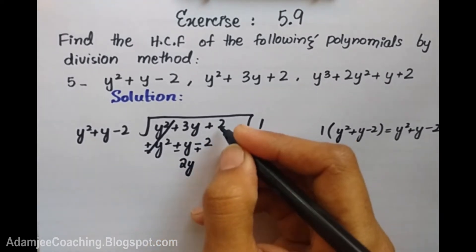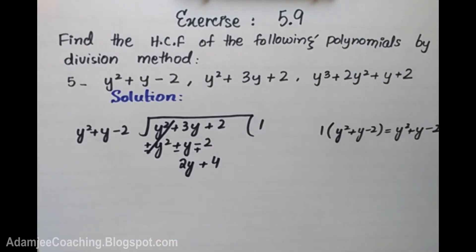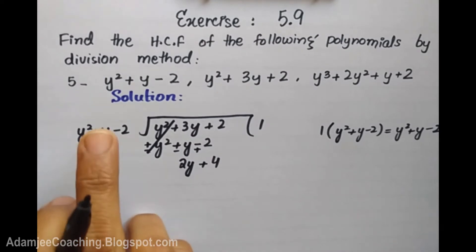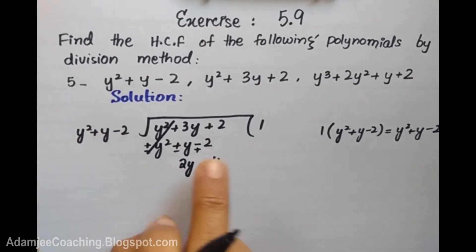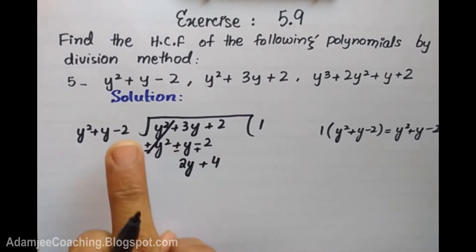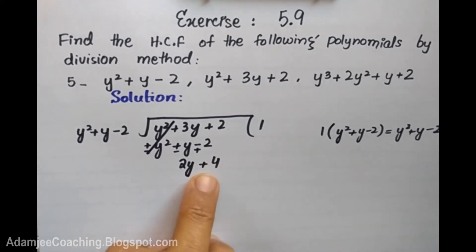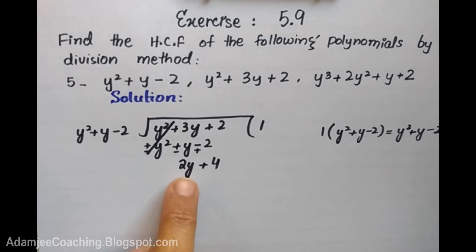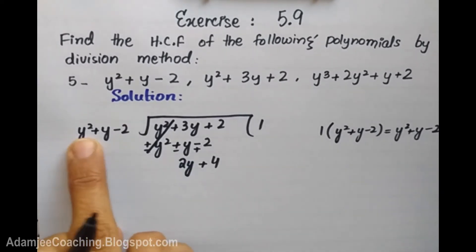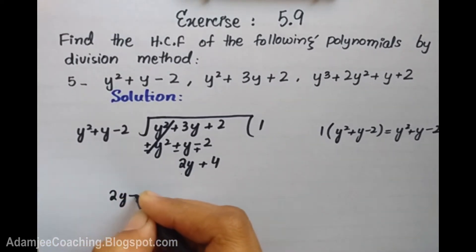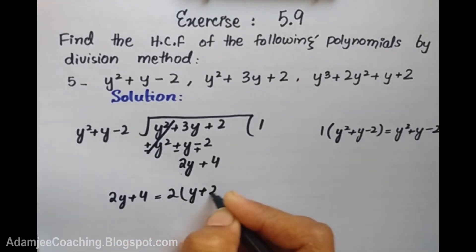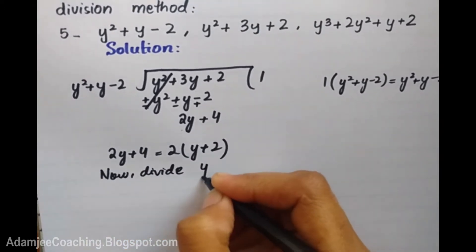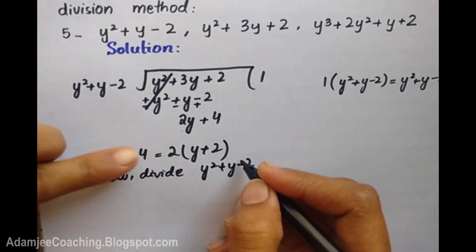After subtraction I get a positive 2y. Then 2y plus 2y, and plus 4. So the remainder is 2y + 4. Now the remainder 2y + 4 is smaller than the divisor, so we take 2 as common from 2y + 4, giving us y + 2 as the new divisor.